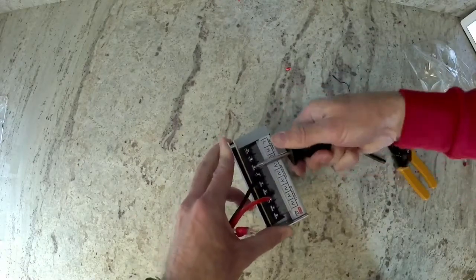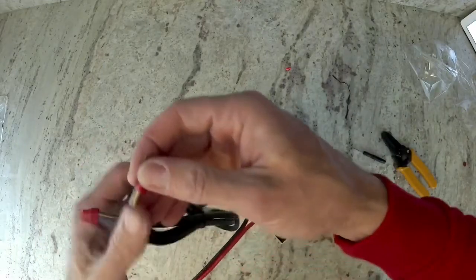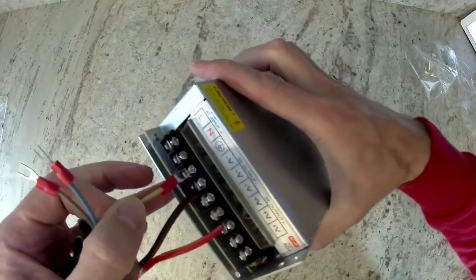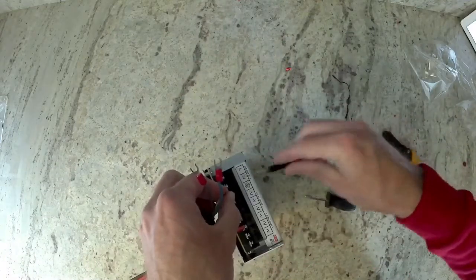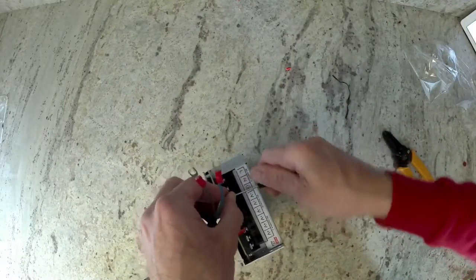Go ahead and loosen up those terminals. Then we're going to take the yellow and green wire, and it's going to go under the ground symbol. Then tighten that down.